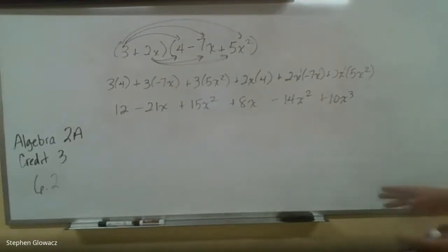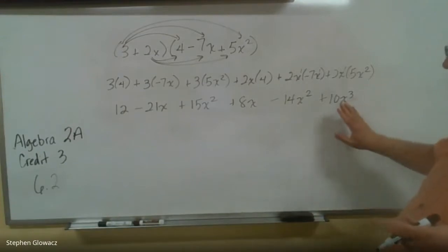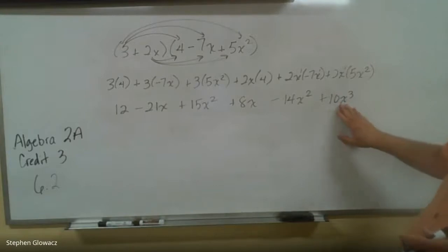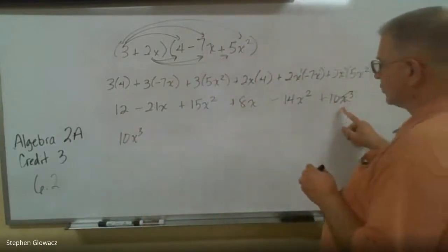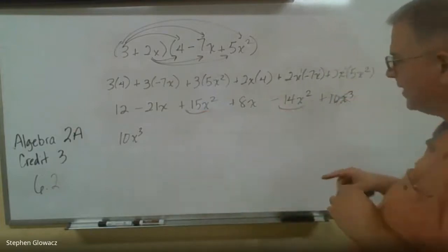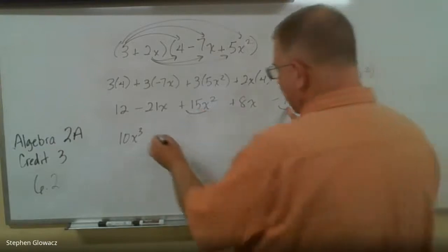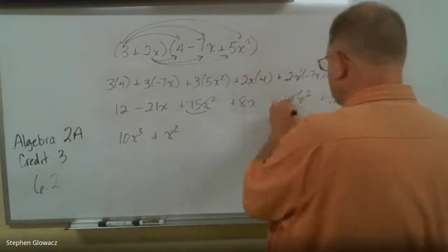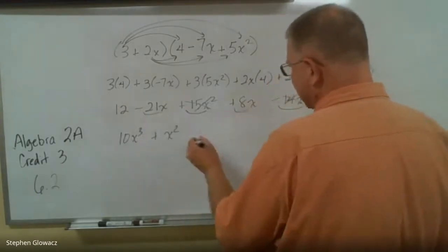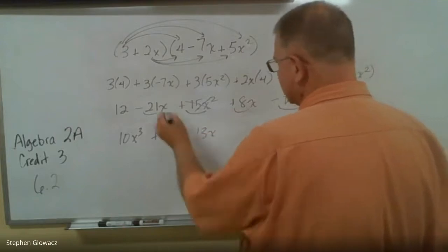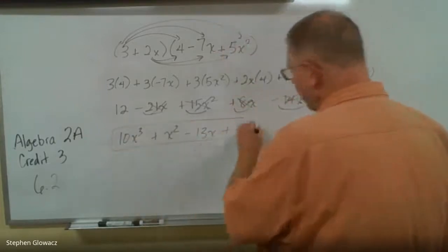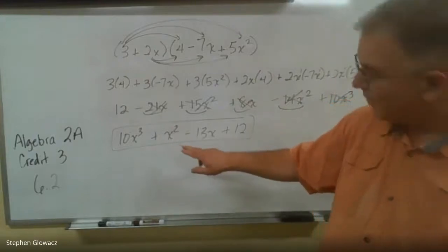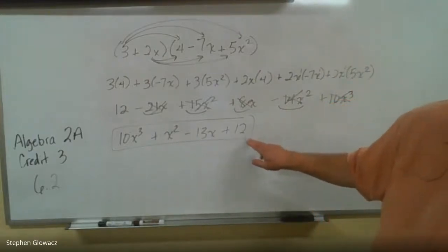Now we're going to combine like terms and put this in standard form — the highest degree first, just like we did with adding and subtracting in the previous lesson. So the biggest exponent is x³: 10x³. Then x²: 15 minus 14 is 1x², or just x². Then the x's: negative 21 plus 8 is negative 13x. And the constant term is 12.